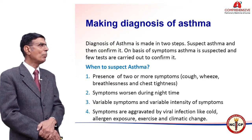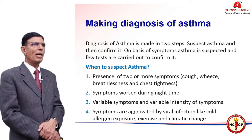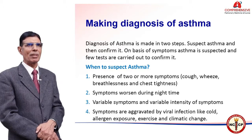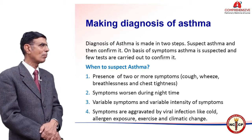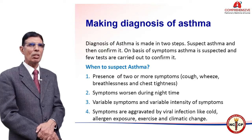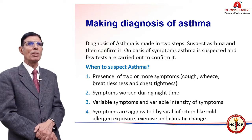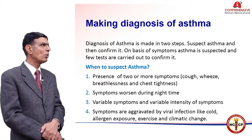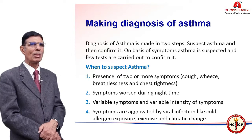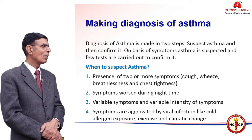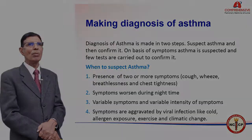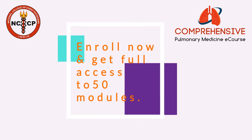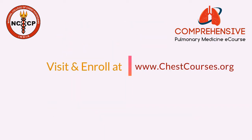How can we make a diagnosis of asthma? It can be done in two steps. In the first step, suspect; and in the second step, confirm. We suspect asthma on the basis of symptomatology — the presence of two or more symptoms out of cough, wheeze, dyspnea, and chest tightness, along with variable airflow obstruction.